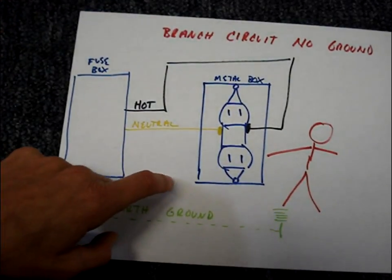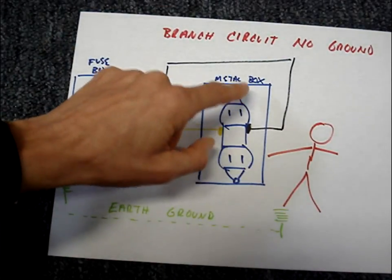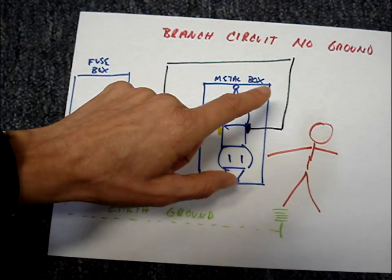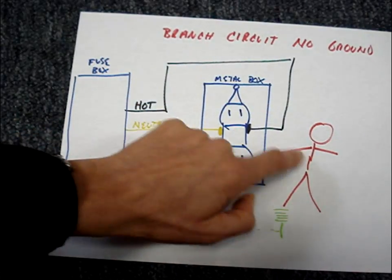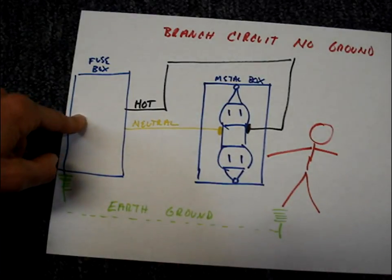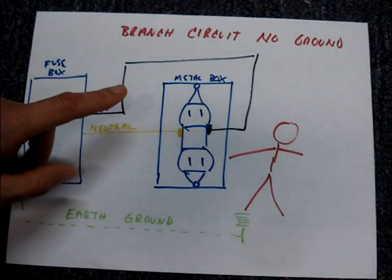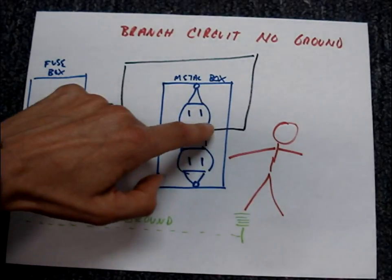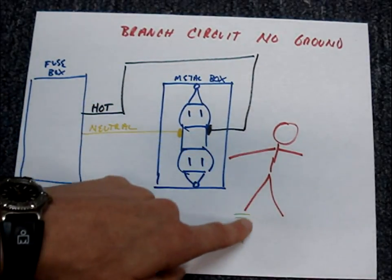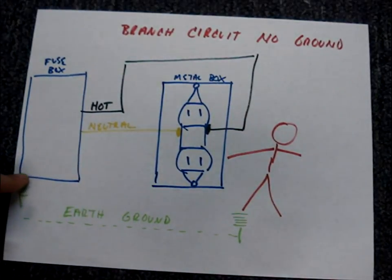This circuit is dangerous because it's waiting for you to come along and possibly complete the path through the earth ground back to the source. You may be thinking that a breaker will trip if a person becomes part of the path back to the power source.